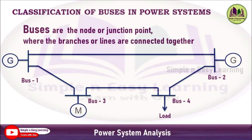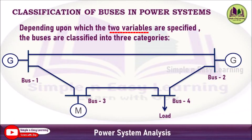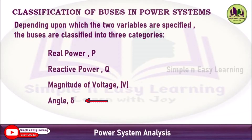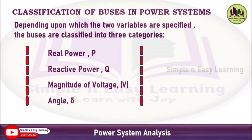Classification of buses: a bus is a common junction point where a number of branches and lines are connected together. Depending on which two variables are specified, the buses are classified into three categories. In this power flow analysis, there are four variables: real power P, reactive power Q, magnitude of voltage V, and voltage angle delta. Out of these four, any two variables are specified.